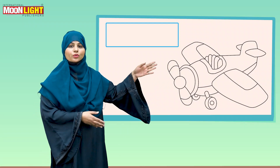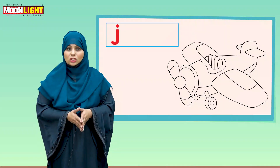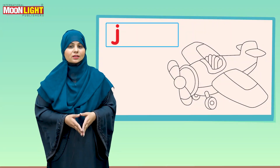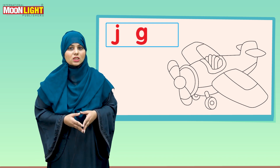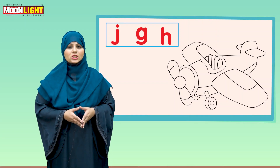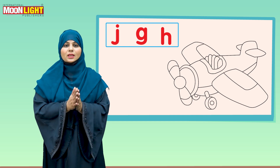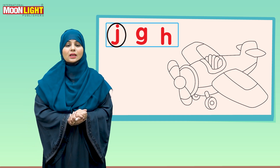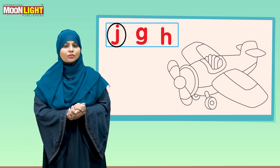Now we are moving to the next one, and the picture is of igloo. There are three letters below igloo: the first one is D — D says 'd'; the second one is I — I says 'i'; and the third one is F — F says 'f'. We are going to encircle I, because I says 'i' and I is for igloo.